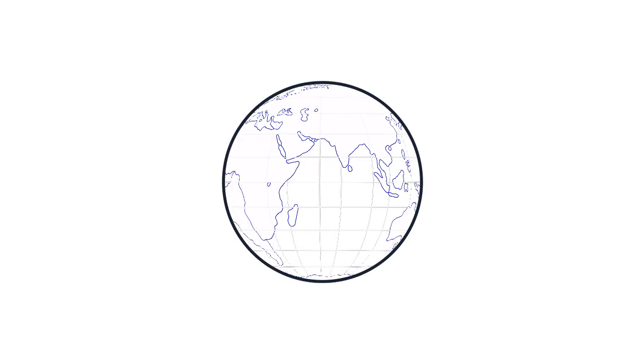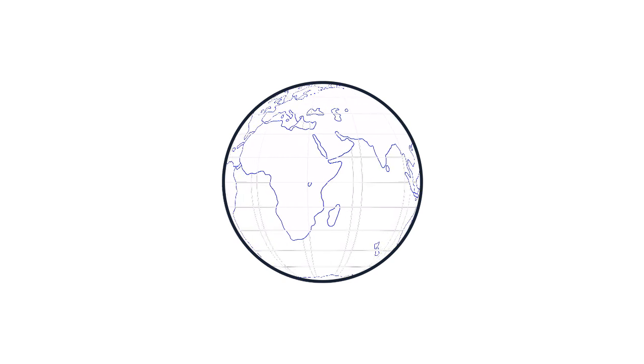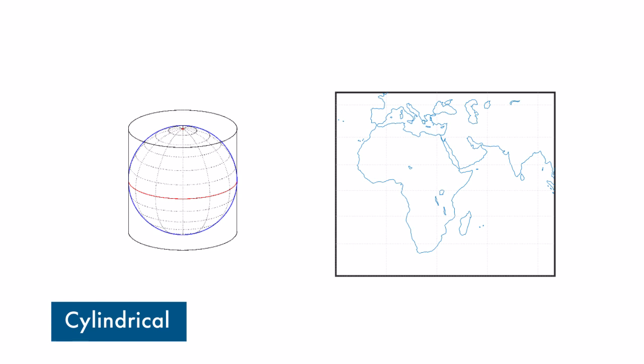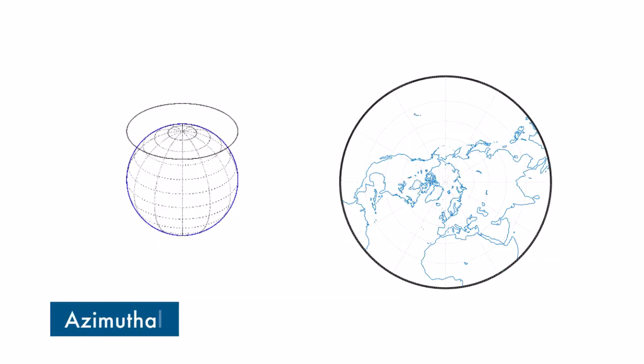In addition, you can draw a map of your choice — for example, a map of Africa and India — and switch from one projection to another, choosing between cylindrical, conic, or azimuthal projection families.